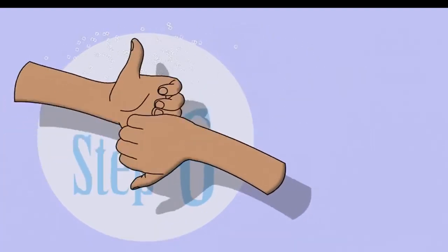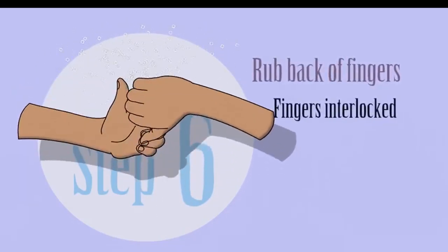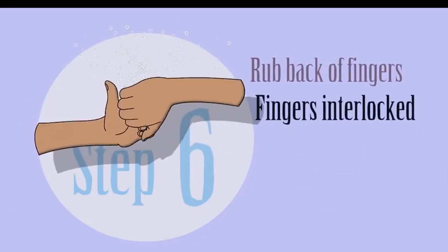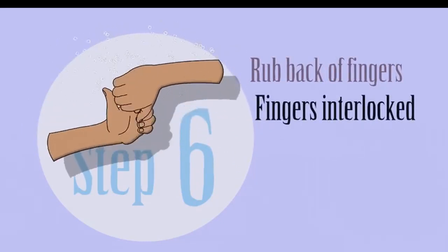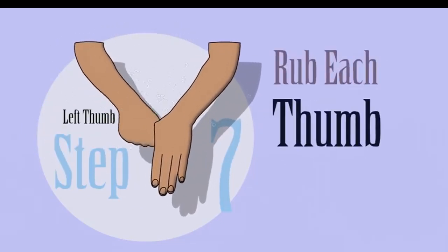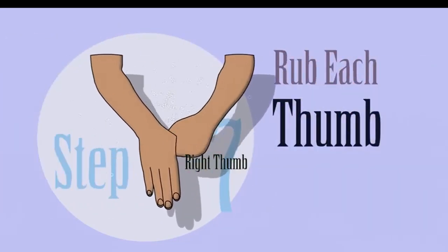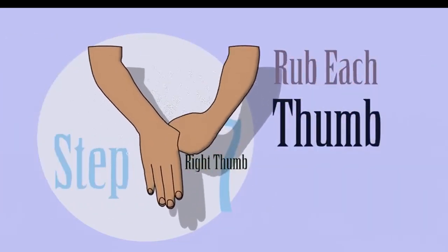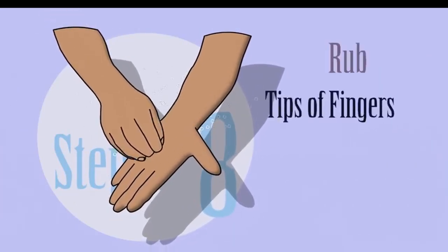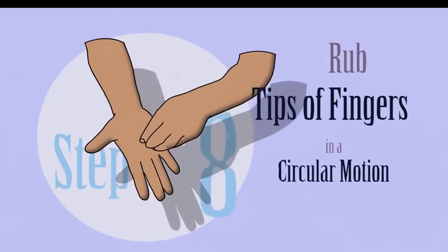Step 6: rub back of fingers with fingers interlocked. Step 7: rub each thumb — left thumb and right thumb. Step 8: rub tips of fingers in a circular motion.